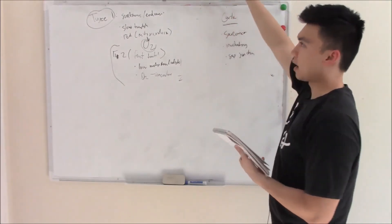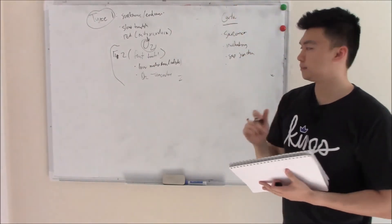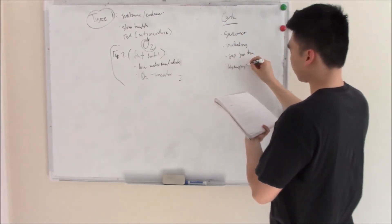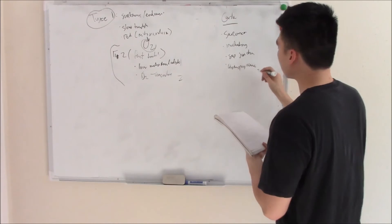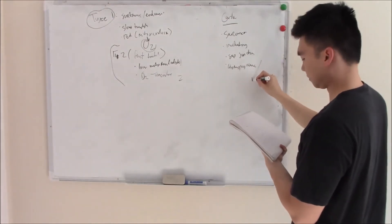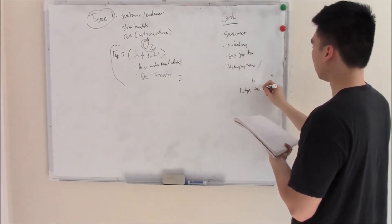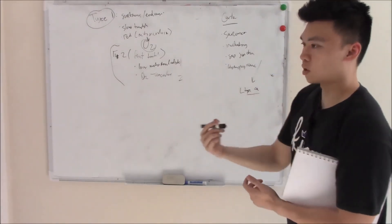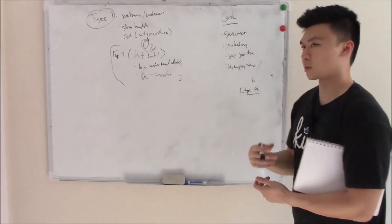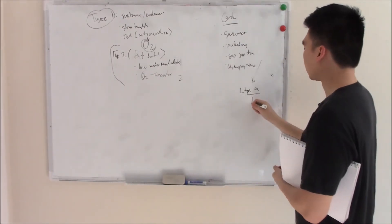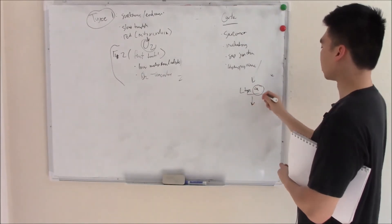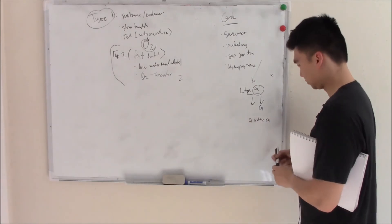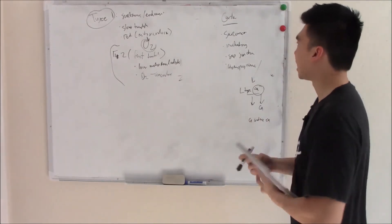That whole system of depolarization is similar. However, instead of dihydropyridine receptors, we replace that with L-type calcium receptors and channels. That calcium channel talks to your ryanodine receptors of your sarcoplasmic reticulum and causes it to release calcium. Sometimes, because this calcium channel causes the release of more calcium, we call it calcium-induced calcium release.